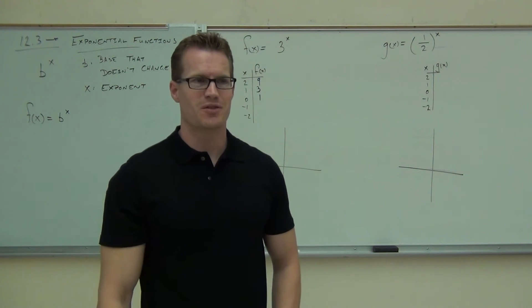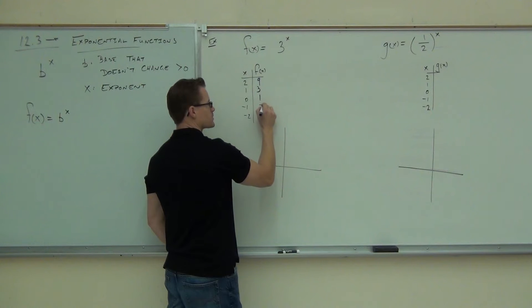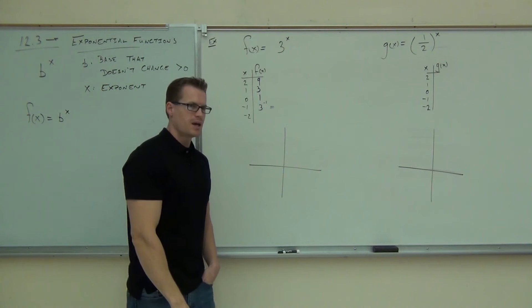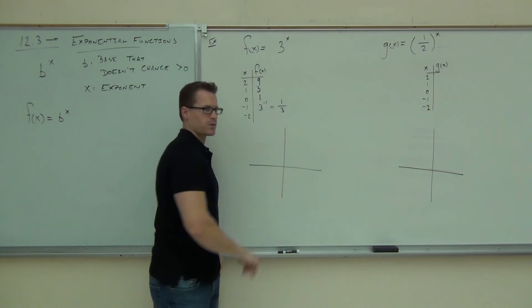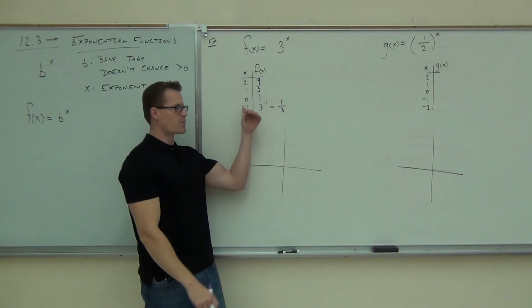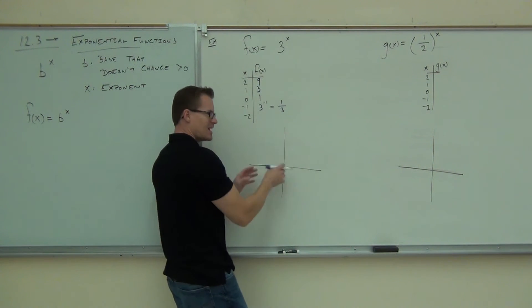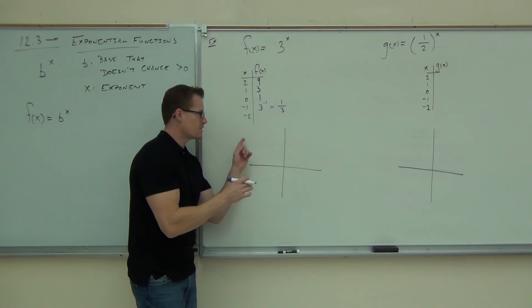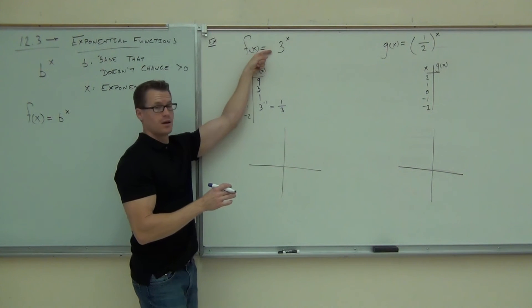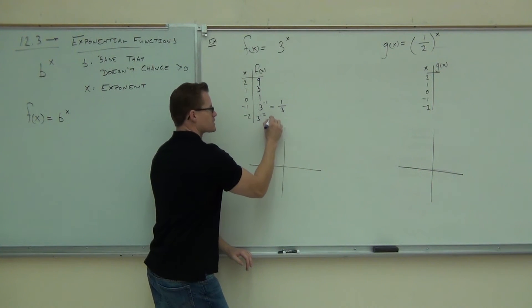Here are the cool ones. If I plug in negative one, that's three to the negative one. Three to the negative one doesn't mean negative three — it actually means one over three. Does a negative number being plugged in give you a negative answer? No. This graph is never going to be negative unless you have a negative in front of it. And negative two would be three to the negative two, which is one-ninth. Notice the relationship: plug in two, get nine; plug in negative two, get one-ninth.